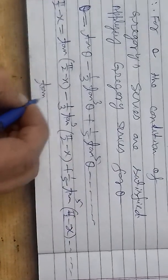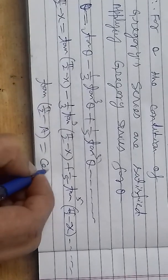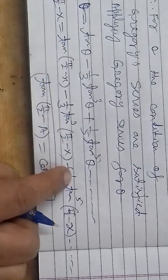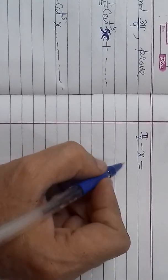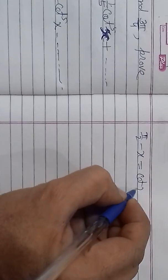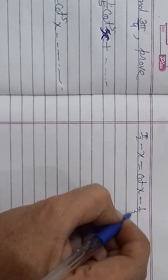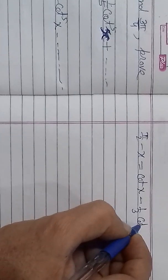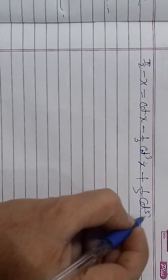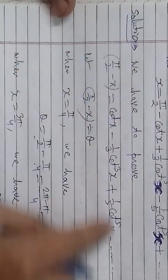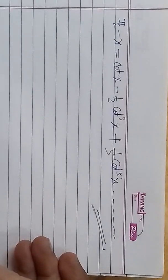We know the identity that tan(π/2 minus x) equals cot x. So applying this identity to every term: left hand side π/2 minus x remains unchanged. On the right hand side, tan(π/2 − x) converts to cot x, then minus 1/3 cot³x, then plus 1/5 cot⁵x, and so on. This is exactly what we had to prove — hence proved. Thank you very much for listening. Walhamdulillahi rabbil alameen.